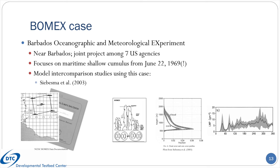The fifth supported case in the repository is from the Barbados Oceanographic and Meteorological Experiment, or BOMEX, whose data is now over 50 years old. The field campaign took place near Barbados in the Lesser Antilles of the Caribbean Sea and was a joint project amongst seven U.S. agencies. It features shallow, non-precipitating cumulus over the ocean from June 22, 1969. The low cloud fraction can be a challenge for physics suites designed for large horizontal grid sizes. A particularly relevant model intercomparison can be found in a paper by Siebesma and co-authors from 2003.